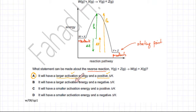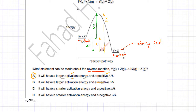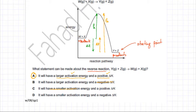The remaining statements are incorrect. Statement B says the reverse reaction will have a negative enthalpy change, which is wrong because the reverse reaction is endothermic — the products are gaining energy. Statement C says it will have a smaller activation energy, which is incorrect because it has a greater activation energy. Statement D combines a smaller activation energy with a negative delta H — both parts are incorrect. So option A is the correct answer.